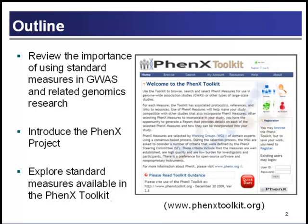In the next 20 minutes or so, I plan to first provide you with some general background on genome-wide association studies and why it's so important to use standard methods for assessing the phenotypes and exposures of interest from your study participants. This will lead into an introduction to the Phoenix project — Phoenix stands for Consensus Measures for Phenotypes and Exposures — and the Phoenix toolkit provides a resource of standard phenotypic and exposure measures for incorporation into genomics research studies. Then we'll explore some of the measures currently available.